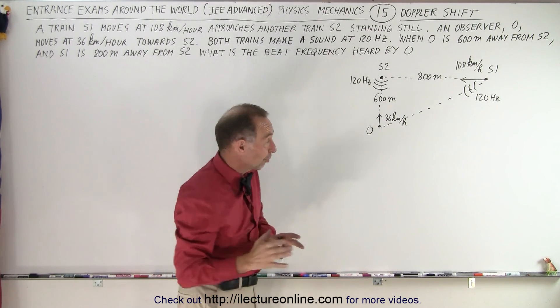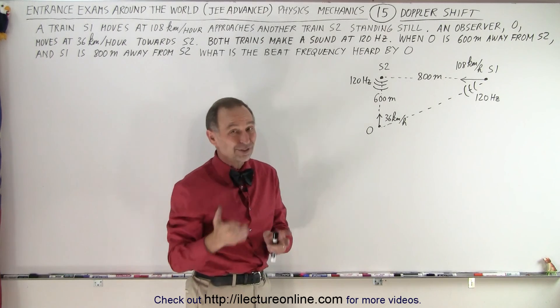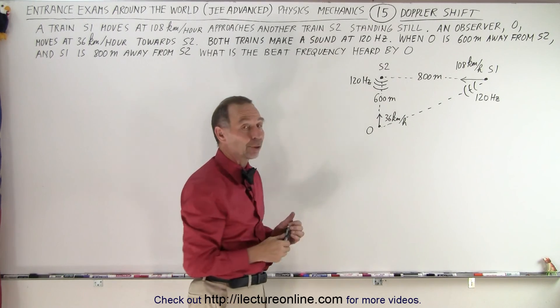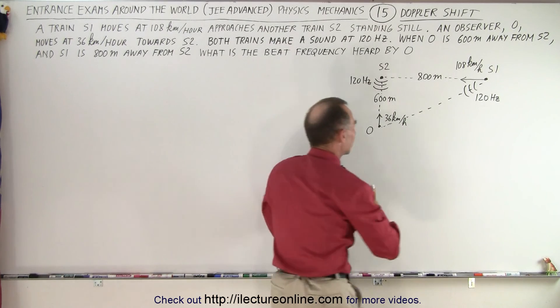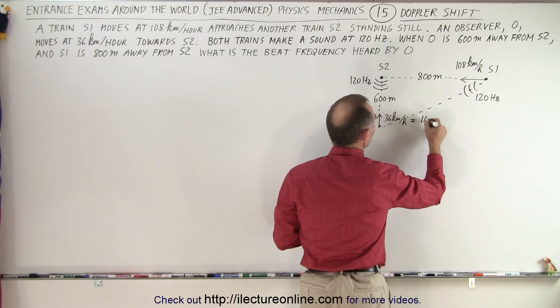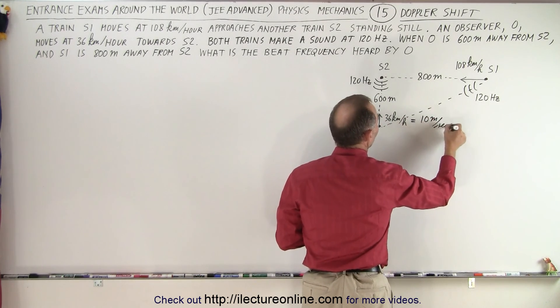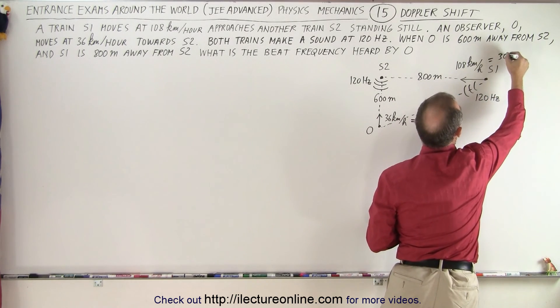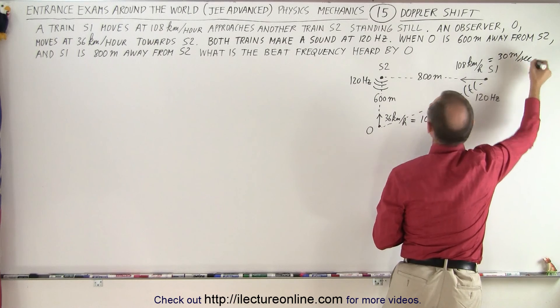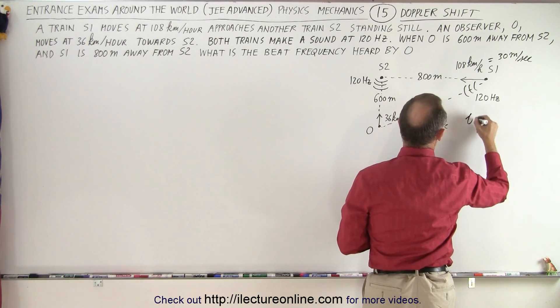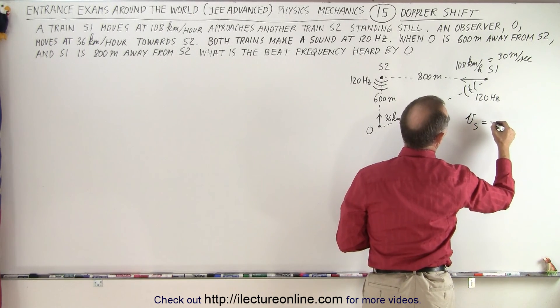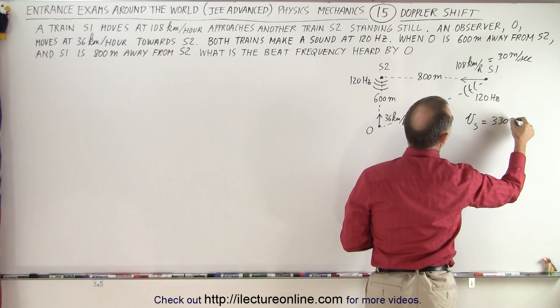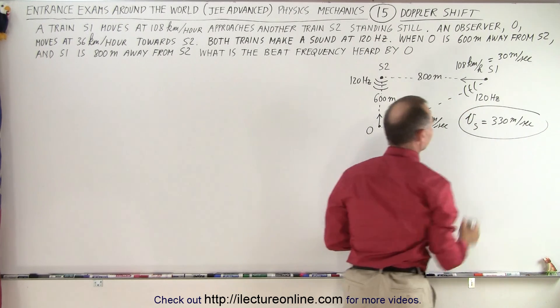Of course, the quick conversion from kilometers per hour to meters per second can be done by dividing that by 3.6, so the numbers are kind of nice. This means that this is 10 meters per second, and this one here divided by 3.6, that means this is 30 meters per second. They also told us that the velocity of sound is equal to 330 meters per second, so that would also need to be a given.